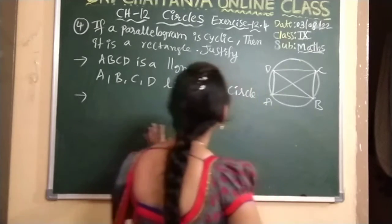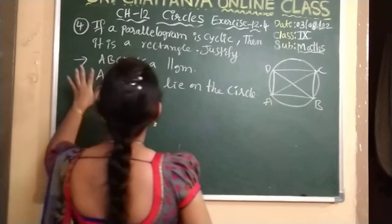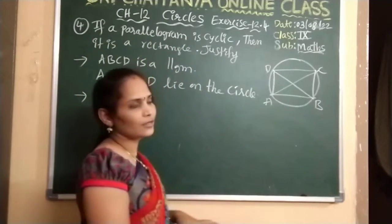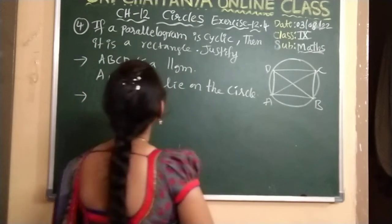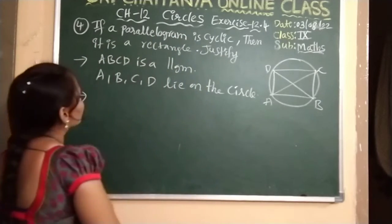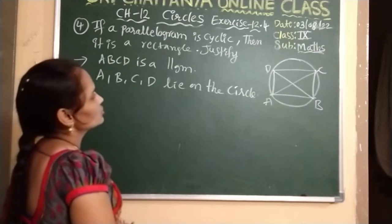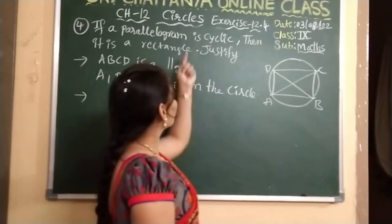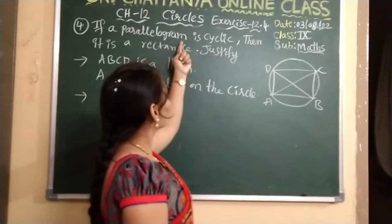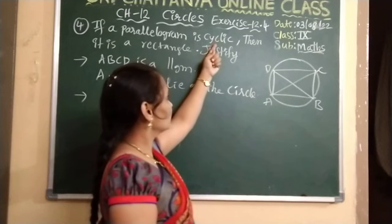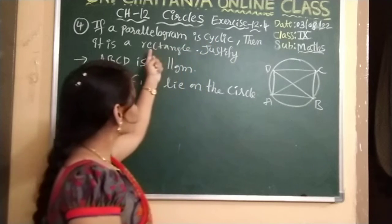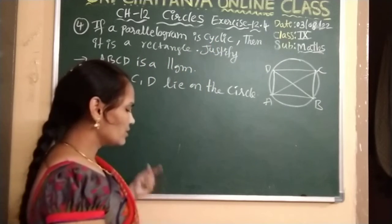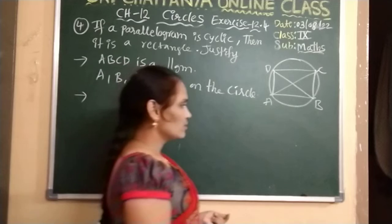See here, the question is already written on the board. If a parallelogram is cyclic, then it is a rectangle. Justify your answer.